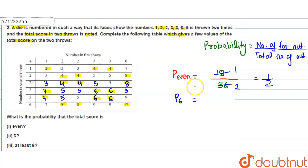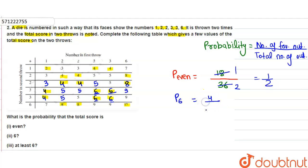Now the probability of 6 equals the number of 6s divided by the total number of outcomes. Counting the number of 6s, we have 1, 2, 3, and 4 — so only 4 sixes. The favorable outcomes equal 4 and total outcomes equal 36, which gives 1 by 9.